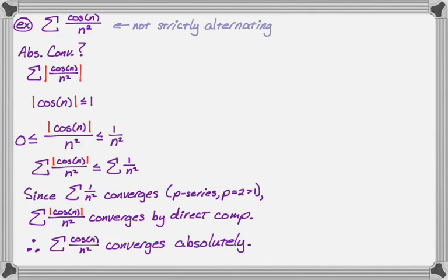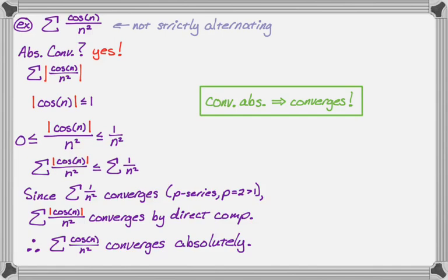It kind of illustrates that sometimes you have to use an additional test. When you throw the absolute values around it, you're not guaranteed to just look at it and say it converges or diverges — you might have to use limit comparison, direct comparison, integral tests, all kinds of options. That's a brief look at absolute versus conditional convergence. If something converges absolutely, as in this example, then we can definitely say it converges. I hope you found this helpful, and good luck.